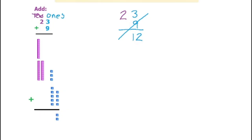It would look like this. So we have 30 here and 2 here. So that would be the answer for 23 plus 9.